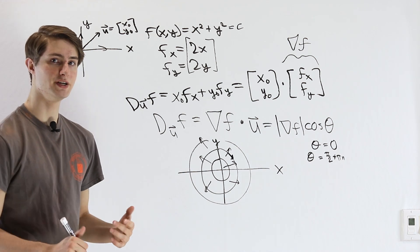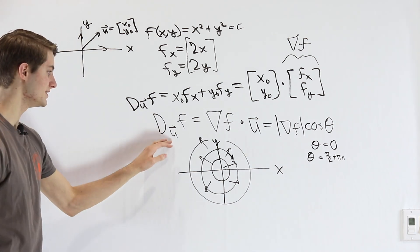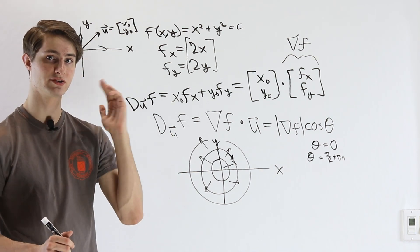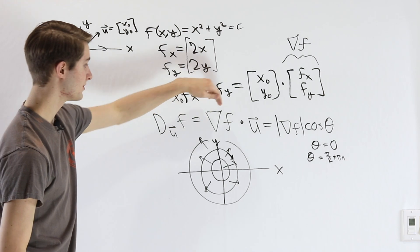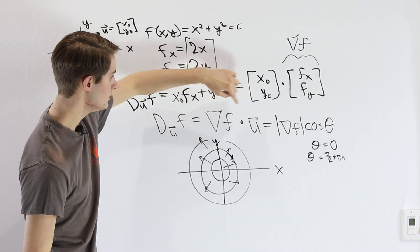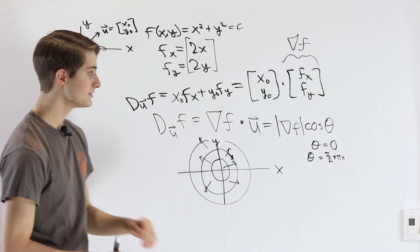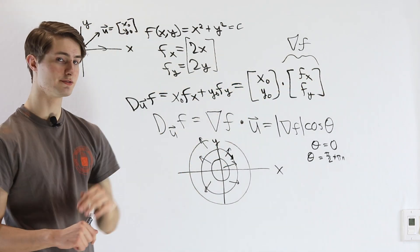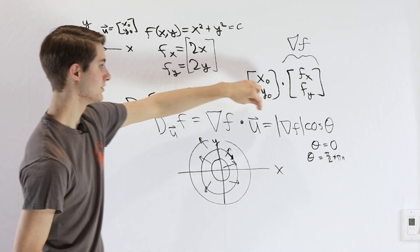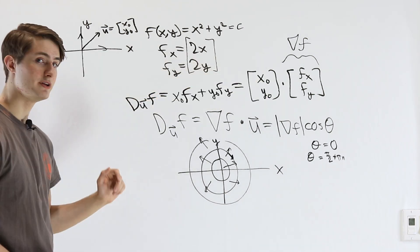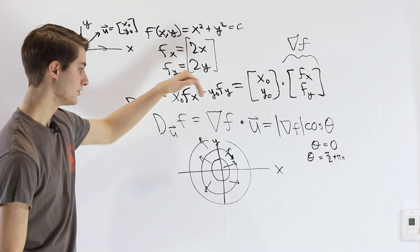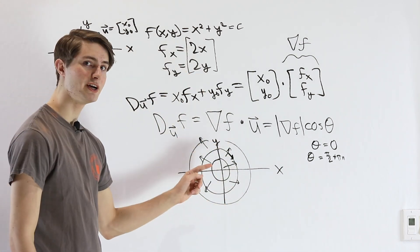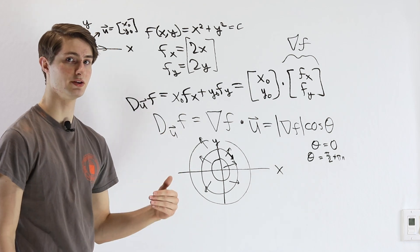The gradient vector arises naturally when we think about derivatives in the direction of a particular vector rather than just along the x and y axes. We end up with a dot product between the unit vector and the gradient vector. Because of that, the direction of fastest increase is parallel to the gradient vector, and the direction where the derivative equals 0 is orthogonal to the gradient. So any time we look at contour lines, the gradient vector is perpendicular to those lines.